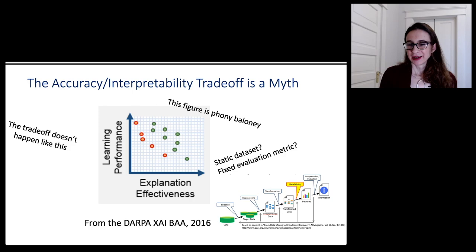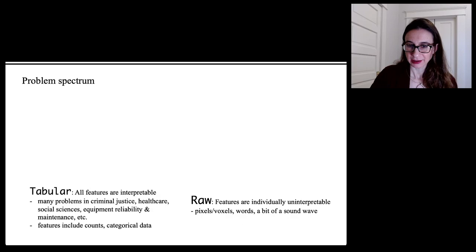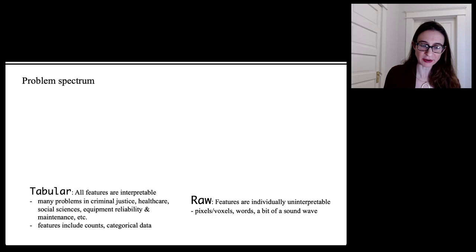Even if you fixed yourself to some benchmark dataset and tried a whole bunch of different machine learning methods of different levels of complexity, you still wouldn't see a trade-off like that. To be honest, it's mostly flat, and I'll show you some examples. There's a lot of nuance in the statement that there's no trade-off between accuracy and interpretability, so let me go into a little more depth on that.